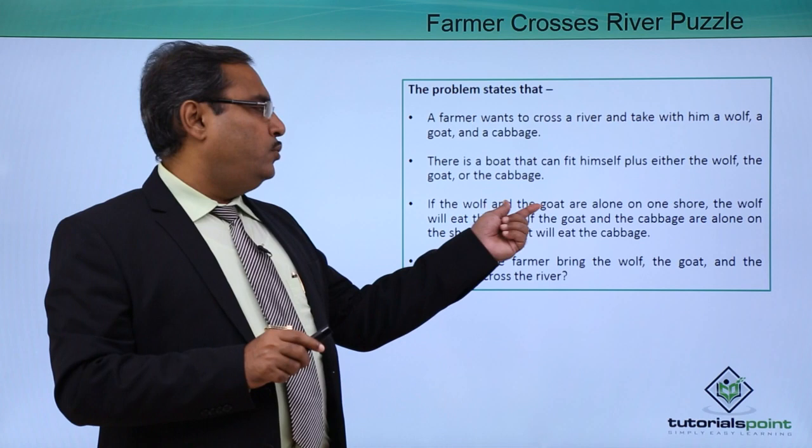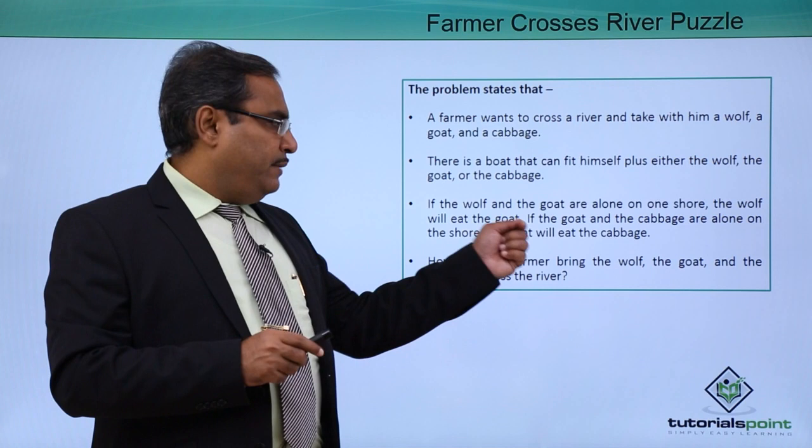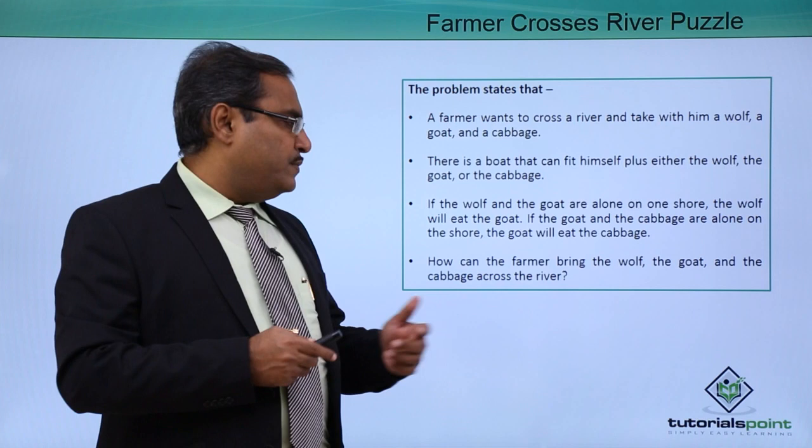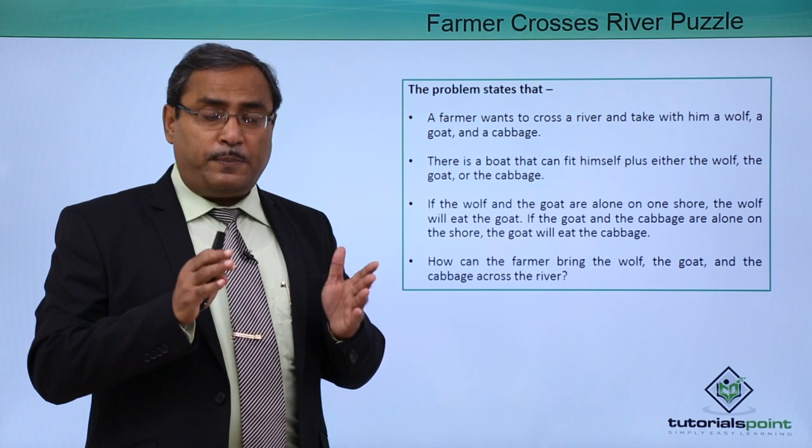If the wolf and the goat are left alone on one shore, the wolf will eat the goat. If the goat and the cabbage are left alone on one shore, then the goat will eat the cabbage — that is quite obvious. The puzzle is: how can the farmer bring the wolf, the goat, and the cabbage safely across the river?